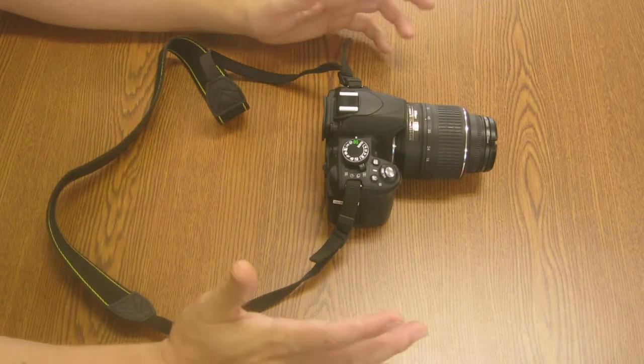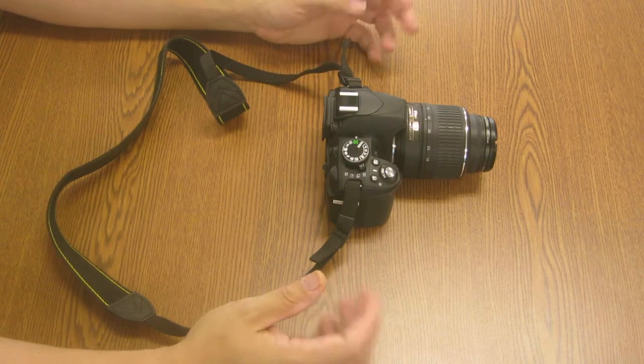This is the Nikon 3100. In this video we're going to talk about the removable parts.